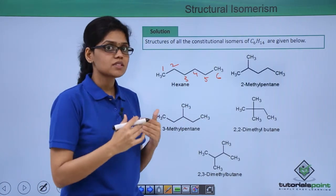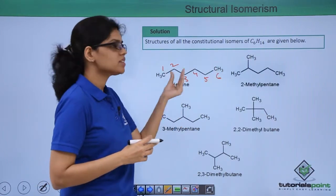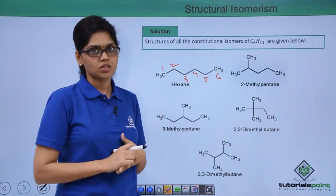Now we know that structural isomers differ in their connectivity. So let's try to replace this methyl group and keep it in another position and see what sort of structure we can get.